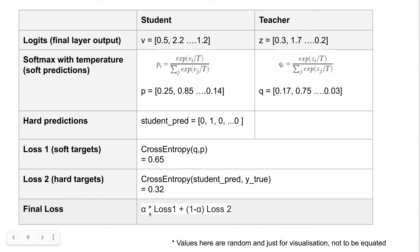So all these values like alpha and T are kind of hyperparameters which we can adjust accordingly. So once we have the loss like this, we propagate this loss into the student model and retrain the student model.